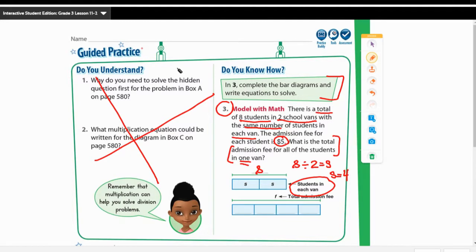Now down here we have F for the total admission fee. This is a number we do not know yet. We know that $5 is what it costs for each student, and there are four students in each van. We're only looking for one van. So we're going to put $5 in each one of these boxes. And our equation then is going to be F equals five times four, because we need to figure out what does it cost for four students if the admission fee is $5. So that means that F equals $20. So it'll cost $20 for one van of students to attend. And you see that we used the bar diagram and equations to help solve that problem.